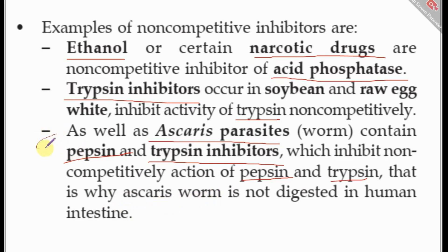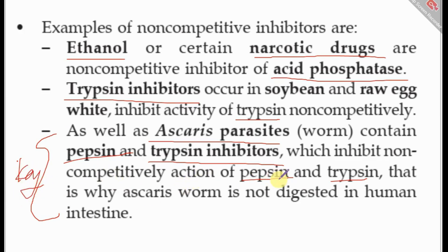The pepsin and trypsin inhibitors in ascaris worms non-competitively inhibit the activity of pepsin and trypsin in the human intestine. This explains why ascaris worms are not digested in the human intestine — they produce non-competitive inhibitors of these protein-digesting enzymes.